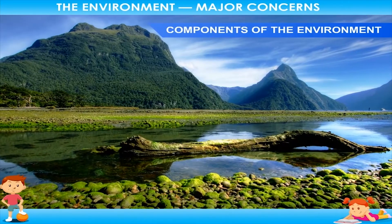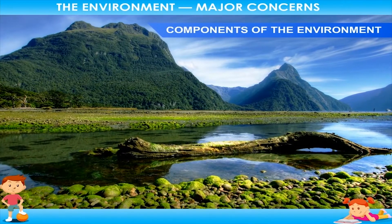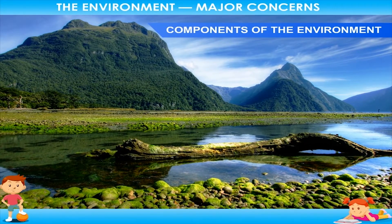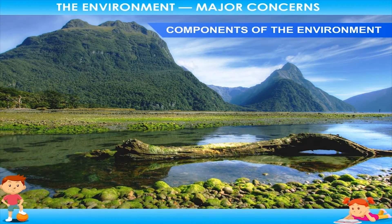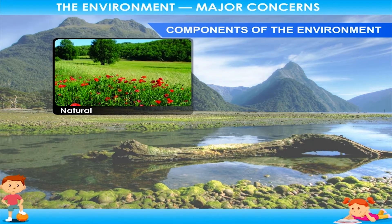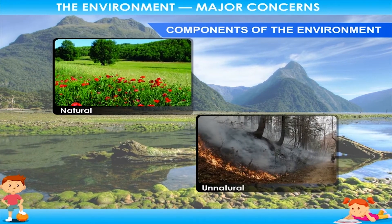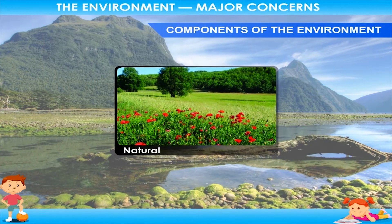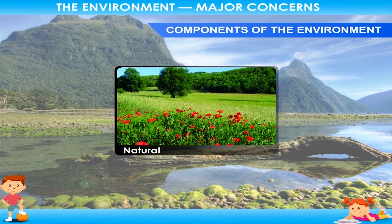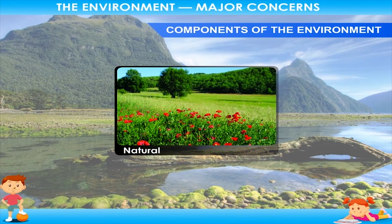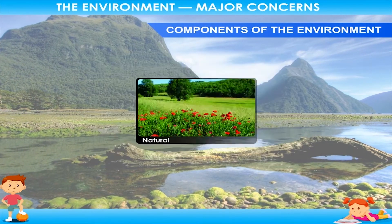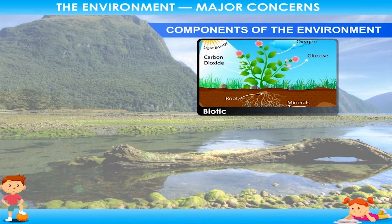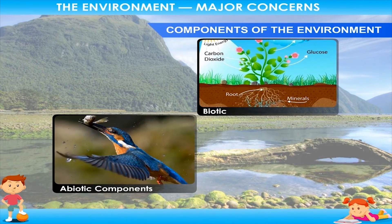Components of the Environment: Environment consists of two parts, natural and unnatural. The natural environment is composed of two parts, the biotic and the abiotic components.